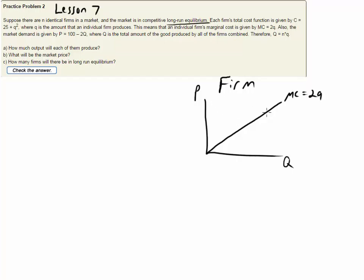And then I'll have an ATC curve. I know that ATC is going to intersect MC at its minimum point. So it's going to start over here and ATC will fall. Once it hits marginal cost it will go up. So that's ATC.